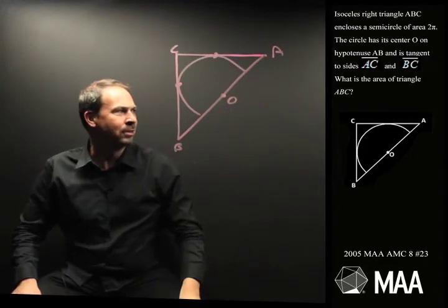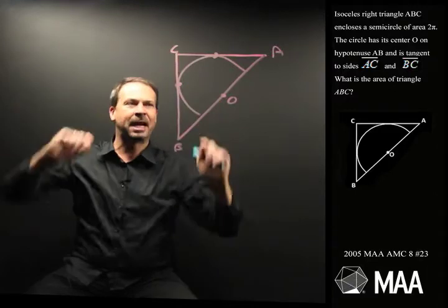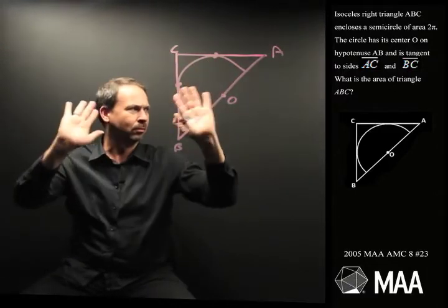And is tangent to sides AC and BC. Okay, where are these? AC and BC, so it's tangent to those sides. Tangent means what? Just touches. Yep, sort of drawn, touching here and here. Great.